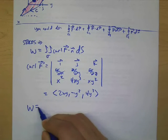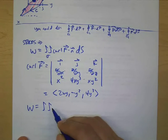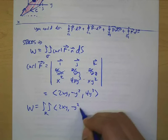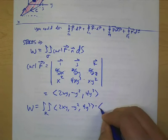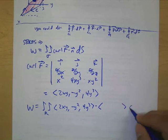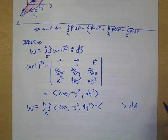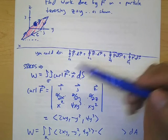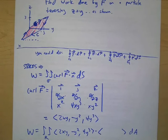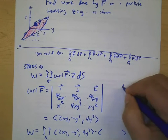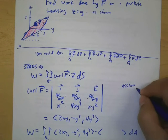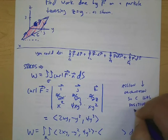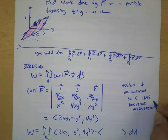And then here we get 4y cubed. All right. So now let's set it up. So we have curl dotted with N. Let's talk about N real quick. So here's our surface.